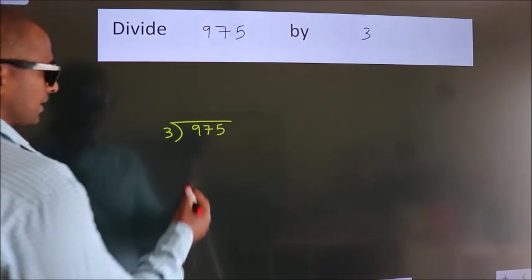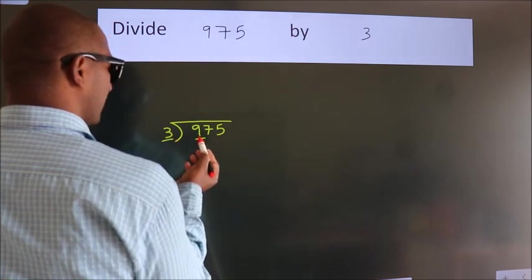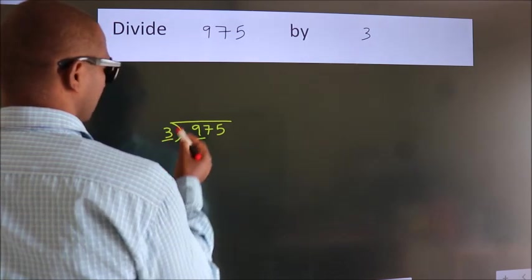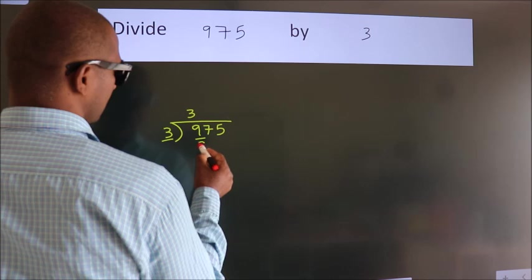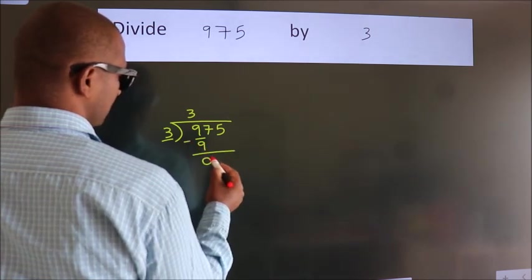Next, here we have 9, here 3. When do we get 9? In 3 table, 3 3's 9. Now we should subtract. We get 0.